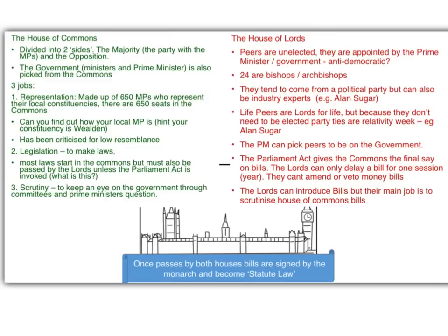The second function of the House of Commons is legislation — the process of making laws. It's worth mentioning that most laws start in the Commons but must also be passed by the Lords in order to become law, unless the Parliament Act is invoked. Please pause here and quickly Google what the Parliament Act is — there are two parts, 1911 and 1949. Finally, the role of the House of Commons is scrutiny: keeping an eye on the government. Even though the government is formed from the House of Commons, it's still the Commons' job to ensure they don't take advantage of their power, through committees and Prime Minister's Questions.